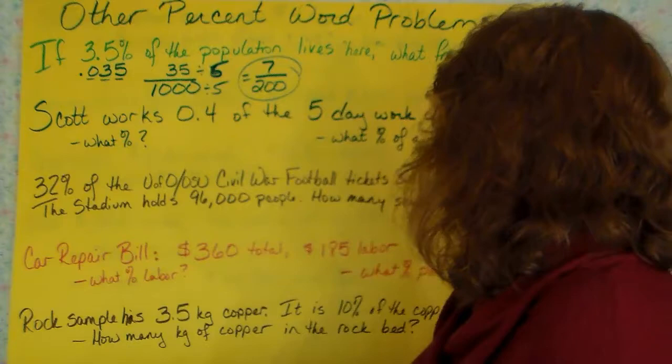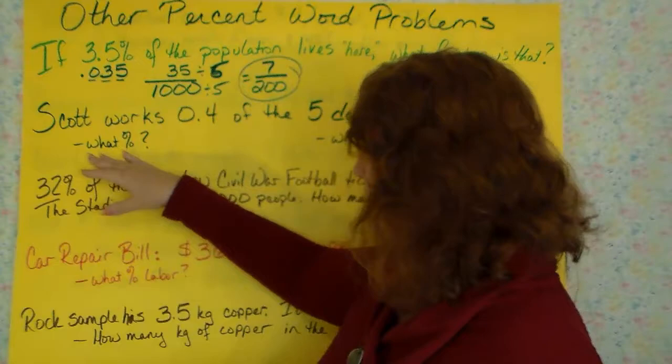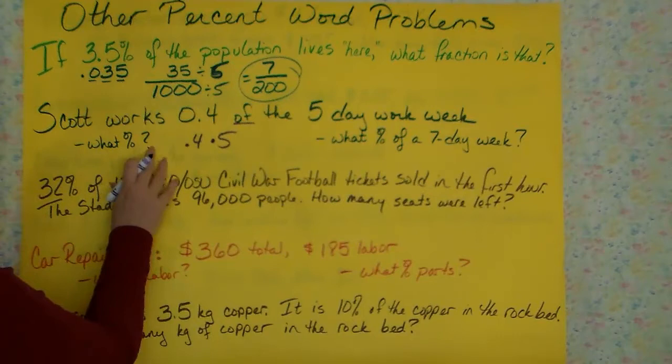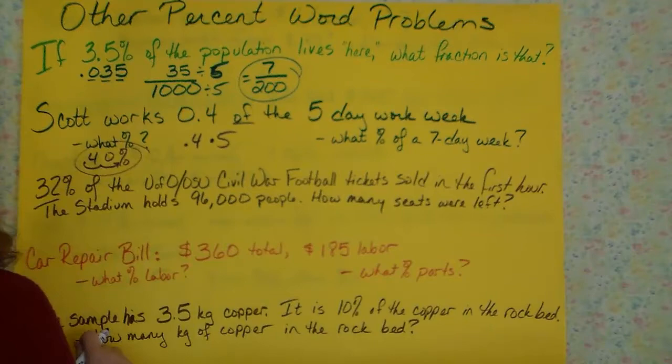Next, Scott works 0.4, four tenths of a 5-day work week, and the question asks, what percentage is that? Well, what percentage is 4 tenths? You take your 0.4 and you move your decimal over 2 times, and it ends up being 40%.